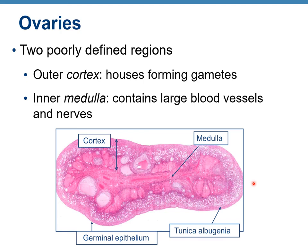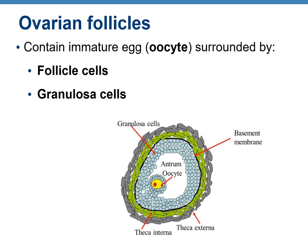In the ovaries we have two poorly defined regions: the outer cortex, where you can see different follicles, and the medulla in the middle. The medulla contains large blood vessels and nerves. In the cortex you will find forming gametes. Ovarian follicles located inside the cortex contain an immature egg, or oocyte, surrounded by follicle cells, granulosa cells, and theca externa and interna cells.